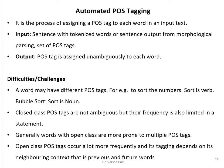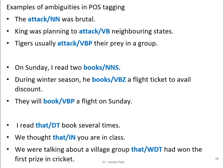Open-class POS tags occur much more frequently because open-class words are very common in sentences. Their tagging depends on neighboring context — that is, previous and future words. Now consider examples of ambiguity in POS tagging.